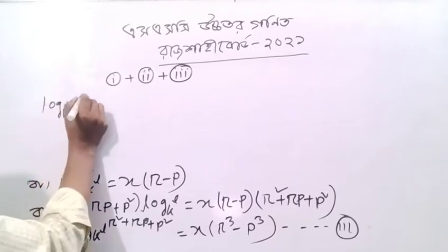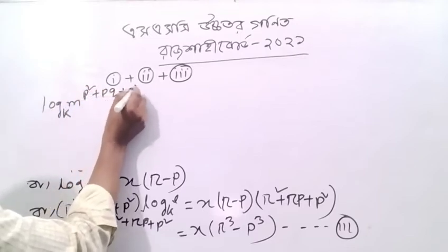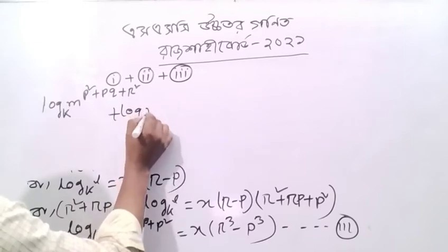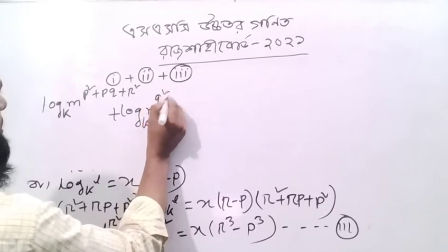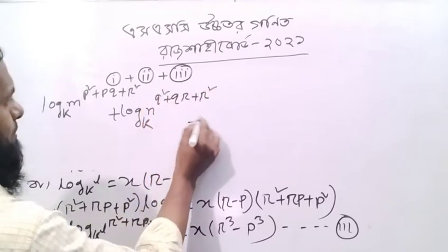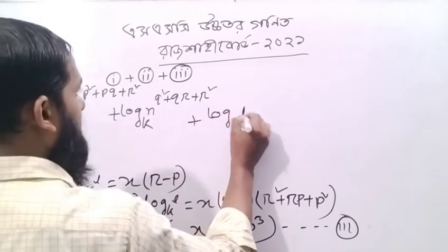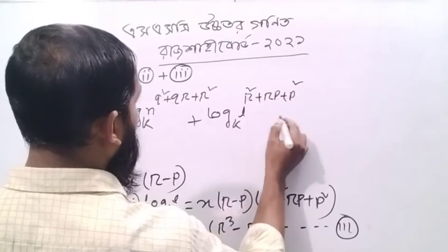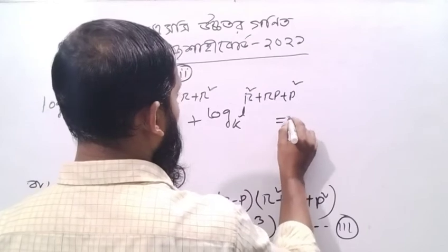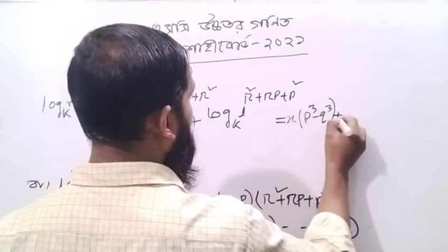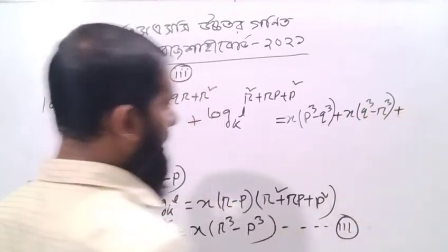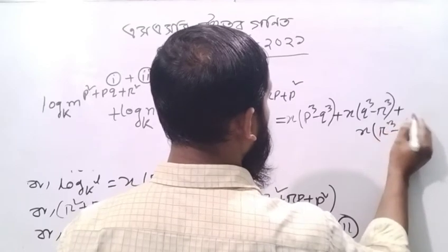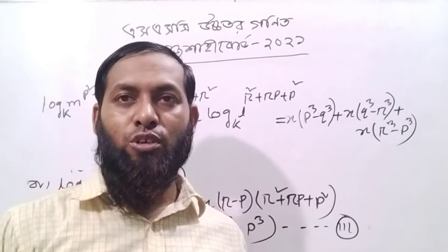Log k for zero, p squared plus pq plus r squared, plus log k theta 7 n, n here q squared plus qr plus r squared, plus log k with theta 7 l, r squared plus rp plus p squared, equal to x into p cubed minus q cubed, x into q cubed minus r cubed, plus x into r cubed minus p cubed.